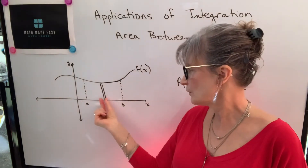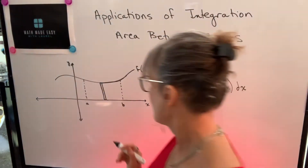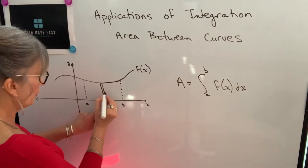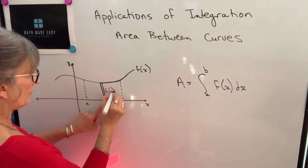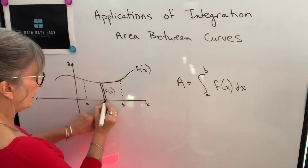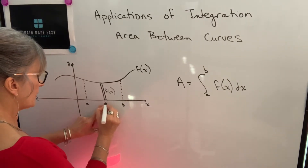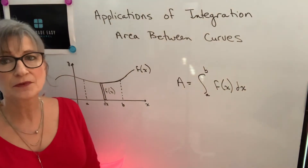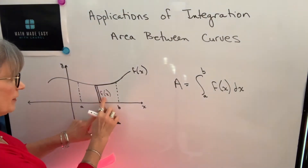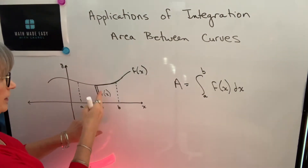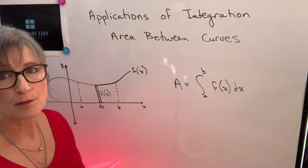They're minuscule — I've drawn it here, but they're just slivers. The area of each rectangle will be the height or the length, which would be the y value or f of x. And the width of the rectangle will be change in x, or another way we can express that is dx. So if we took the area of this one rectangle, it would be f of x dx. And if we summed all those slivers from a to b, we can use integration to sum all of those.